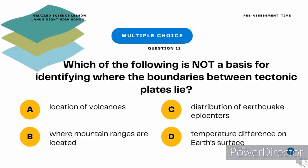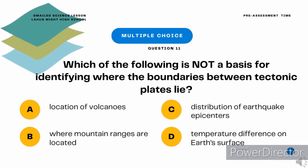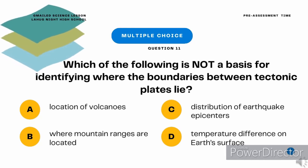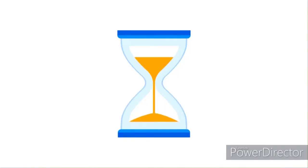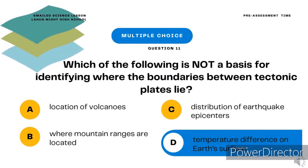Multiple choice question 11. Which of the following is not a basis for identifying where the boundaries between tectonic plates lie? A. Location of volcanoes. B. Where mountain ranges are located. C. Distribution of earthquake epicenters. D. Temperature difference on Earth's surface. The correct answer is letter D, temperature difference on Earth's surface.